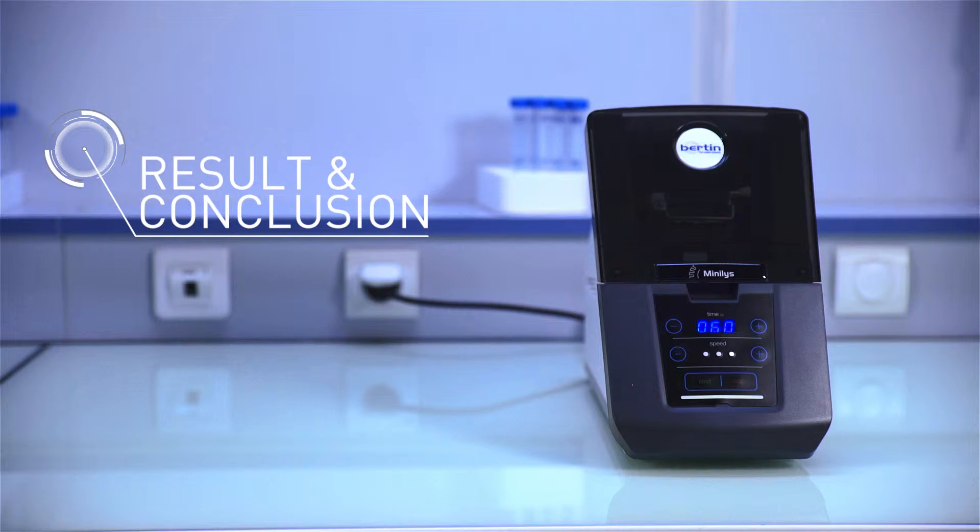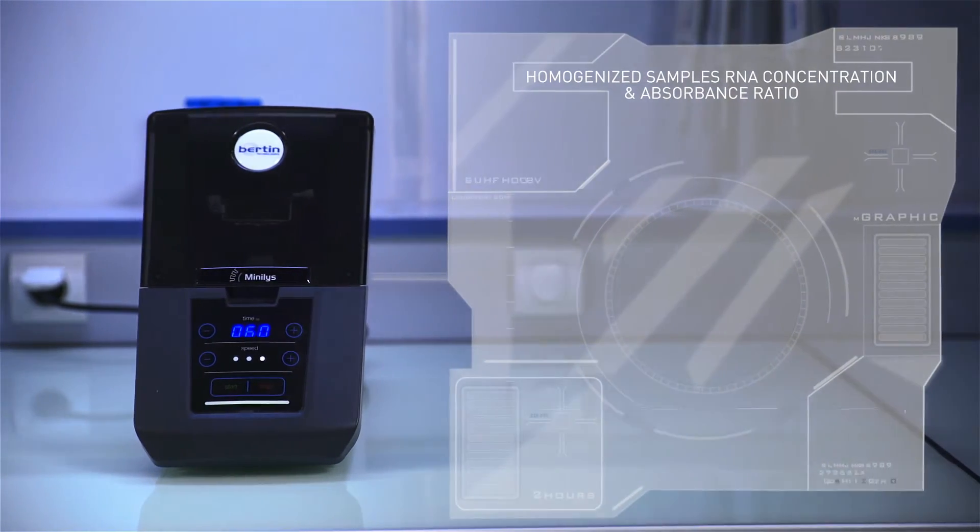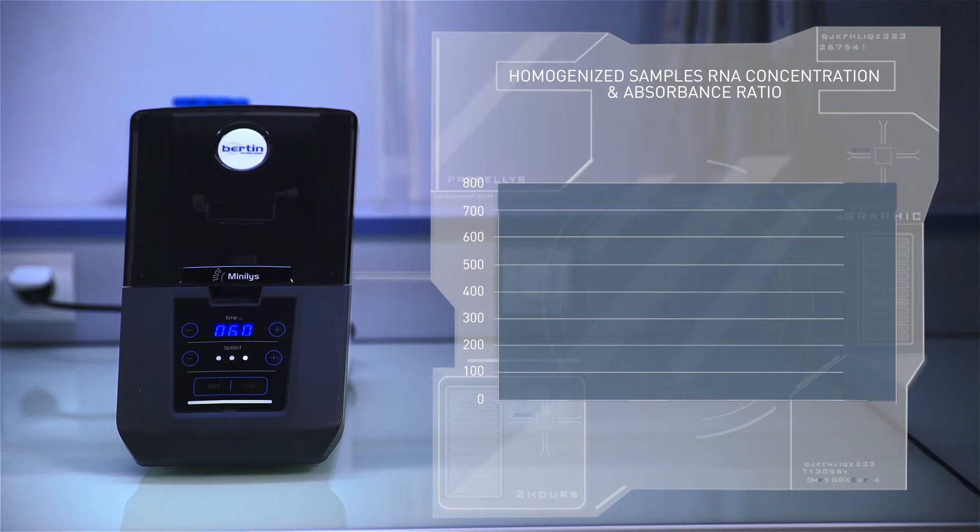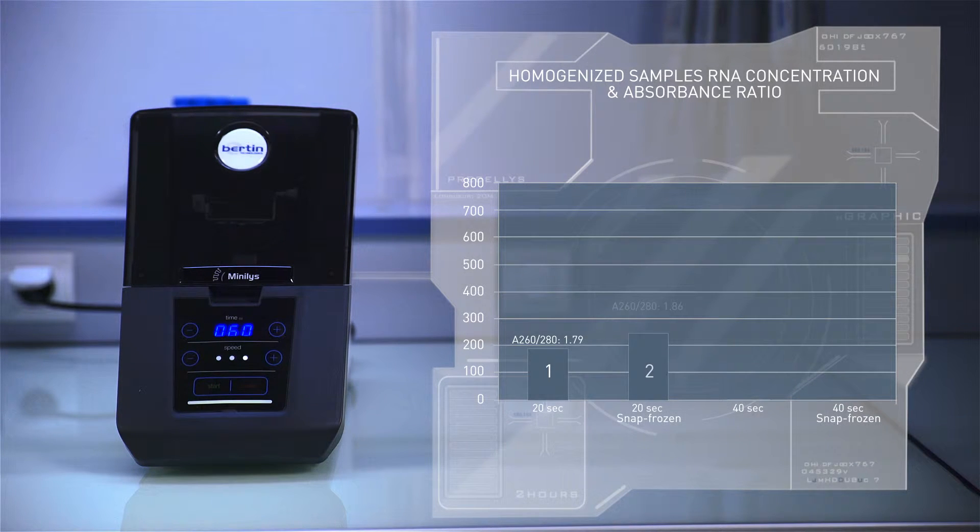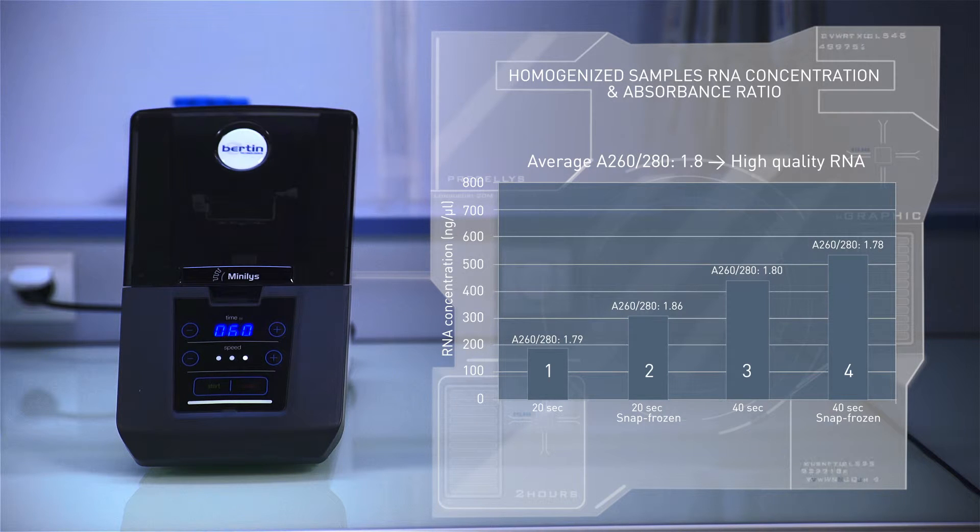By spectrophotometer, the 260/280 absorbance ratio shows an average of 1.8, which is indicative of high quality non-degraded RNA. RNA concentration is also increased after longer homogenization times of 40 seconds versus 20 seconds.